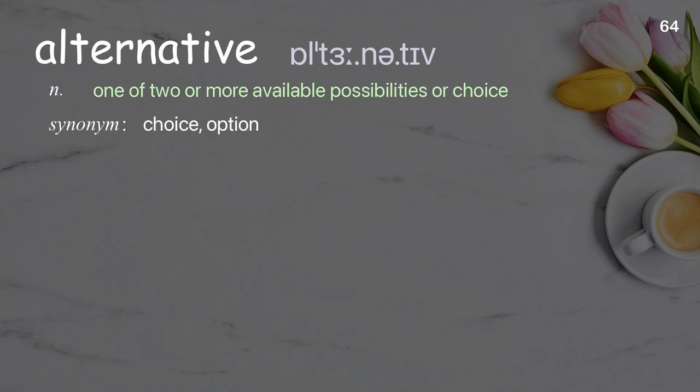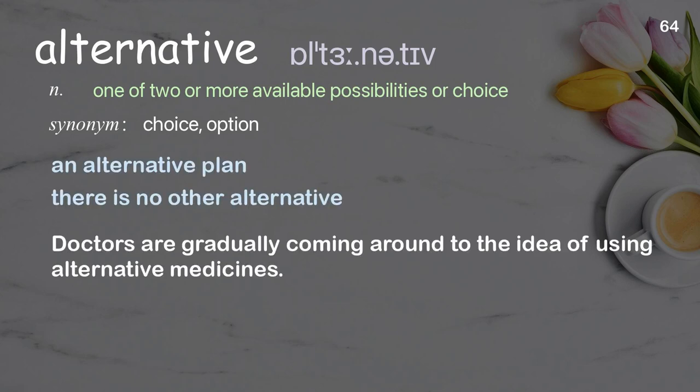Alternative: One of two or more available possibilities or choices. Examples: an alternative plan, there is no other alternative. Doctors are gradually coming around to the idea of using alternative medicines.